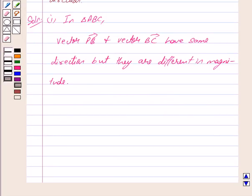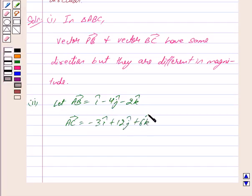Now we take the second example. Let vector AB is equal to I cap minus 4J cap minus 2K cap and vector AC is equal to minus 3I cap plus 12J cap plus 6K cap. Or we can write vector AC as, now taking out minus 3 common from right hand side,